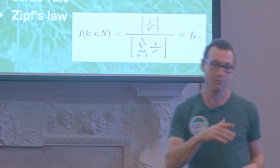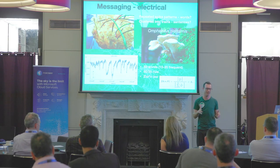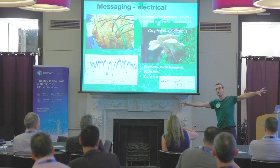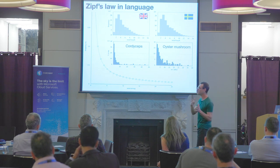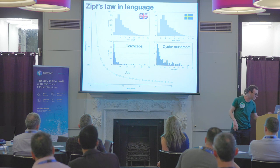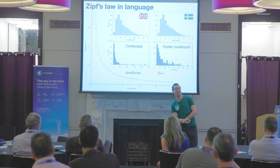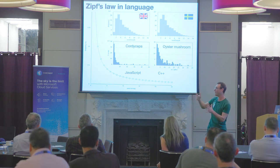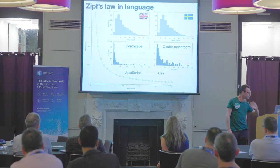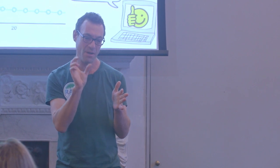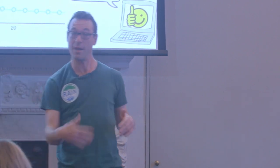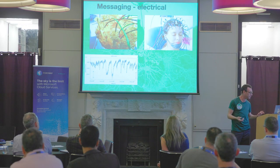That conforms to Zipf's law, which predicts how frequently something will be used in a language. If you look at all the words on the internet, you will see that they conform to this particular logarithmic scale, and this is used to work out whether something is a language or not. Most European languages conform to Zipf's law. And all the fungus that have been studied — the spike patterns they use also conform to Zipf's law. You'll be very pleased to know that JavaScript and C++ also conform to Zipf's law, meaning the commands that are used follow that same logarithmic frequency scale.